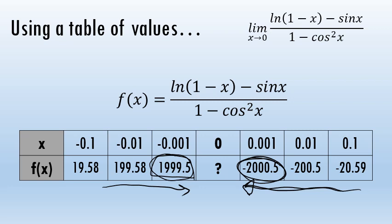As is the case for most problems in mathematics, there are multiple ways to solve this problem, including some that haven't been shown in this video. Regardless of the method used, you will always find that the limit as x approaches 0, of the natural log of 1 minus x minus the sine of x, all over 1 minus the cosine squared of x, does not exist.